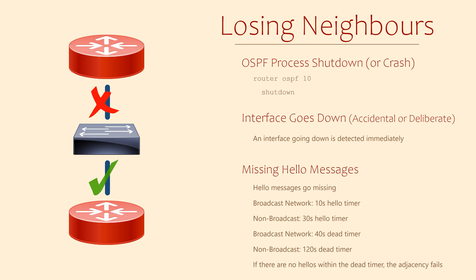So in the example shown here, the bottom router would expect to see hello messages every 10 seconds. When it hasn't seen any hello messages in 40 seconds, it decides that the neighbouring router is down. It is then able to adapt and find other paths through the network, assuming other paths exist of course.